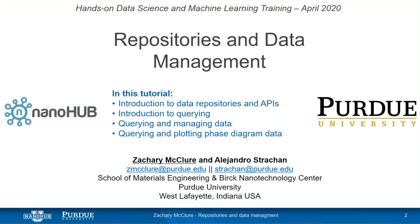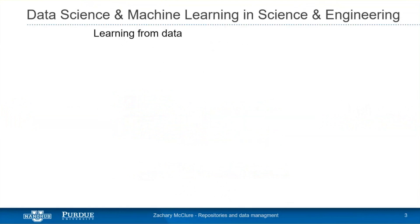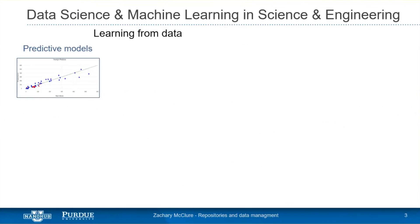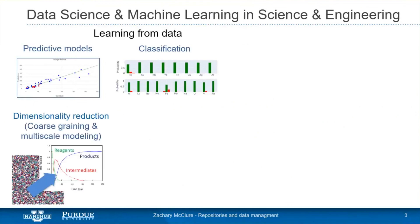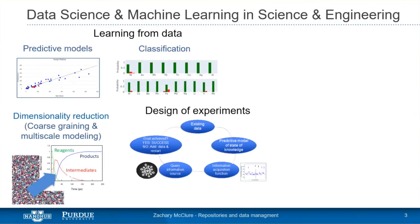Today we're going to build off what we did in the first session, where we introduced Python techniques. Now we're going to access database repositories, figure out what data is out there, and how we can leverage it. We want to motivate why we want to learn about data science and machine learning — techniques already used in commerce, finance, big data, and by companies like Google and Facebook for predictive models, classification, dimensionality reduction, and design of experiments. All these things rely on one key thing: the data, which often isn't centralized or easy to access.